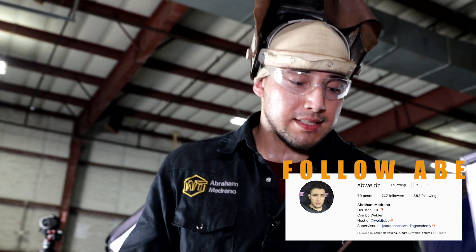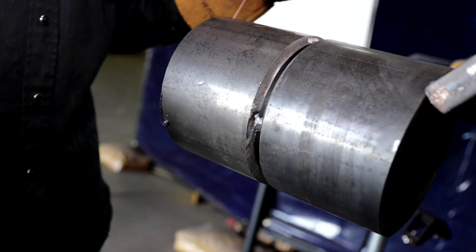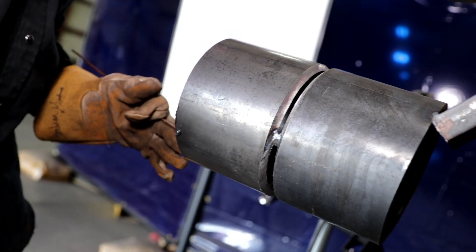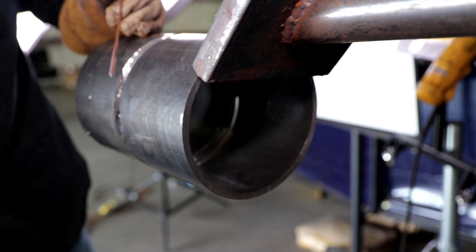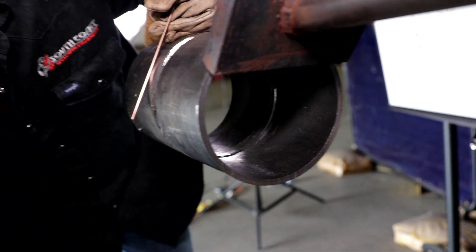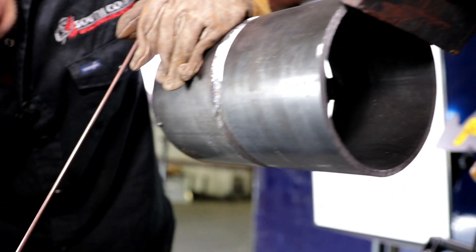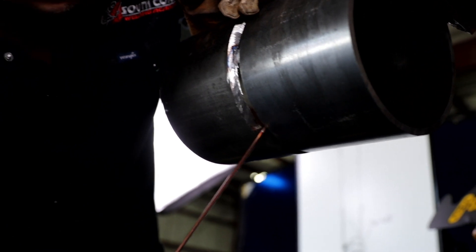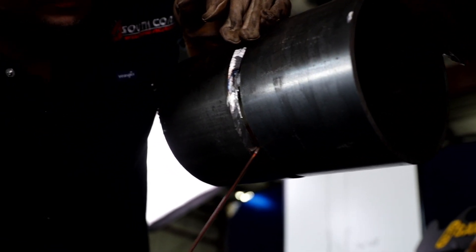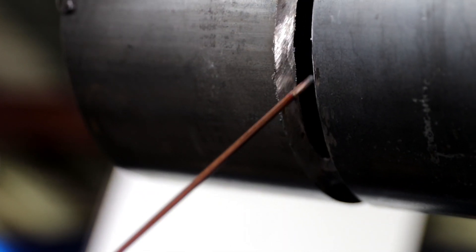Alright guys, so right here I got a 6 inch Schedule 40 pipe. I tacked it up, I got a tack at about 12 o'clock, one around 9 o'clock, and another tack over here by 3 o'clock. Now what I purposely did to show y'all, I pretty much went trigger happy on this pipe and I opened my gap up. As you can see how big it is, it's like half an inch, I think it's big. And I did that on purpose so I can show y'all how to close these gaps.